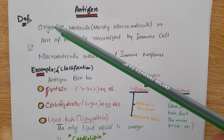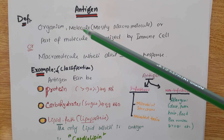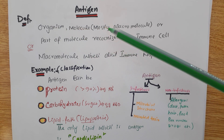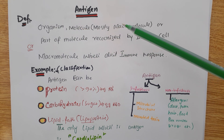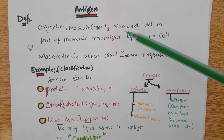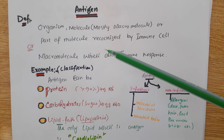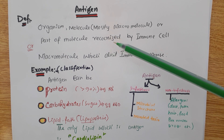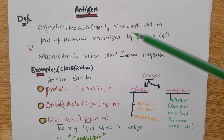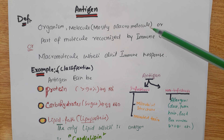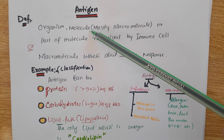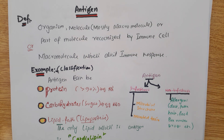An antigen can be an organism, a molecule, a large molecule or macromolecule, or it can be a part of a molecule which can be recognized by our immune cells. We will be calling it antigen.